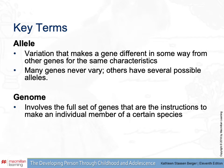A key term for you to understand is the term allele. This refers to the variation that can make a gene different from other genes that are coding for the same characteristics. In many cases, genes will be really consistent across the entire genome. Other times they'll have several different alleles or several different variations. A genome — think of it as your overall genetic code — is the full set of genes that are instructions to make an individual of a certain species.